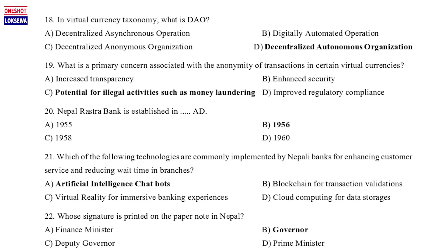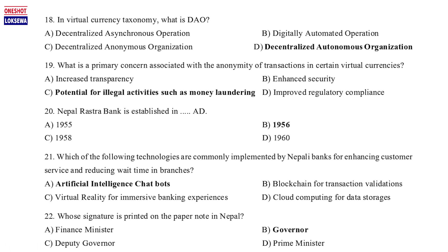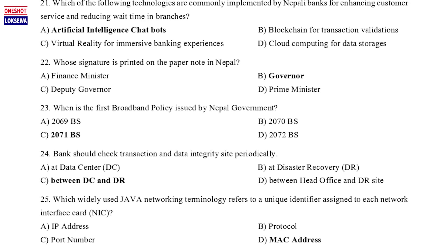Question 21: Which of the following technologies are commonly implemented by Nepali banks for enhancing customer service and reducing wait time in branches? a. Artificial intelligence chatbots, b. Blockchain for transaction validations, c. Virtual reality for immersive banking experiences, d. Cloud computing for data storage. Question 22: Whose signature is printed on the paper note in Nepal? a. Finance minister, b. Governor, c. Deputy governor, d. Prime minister.